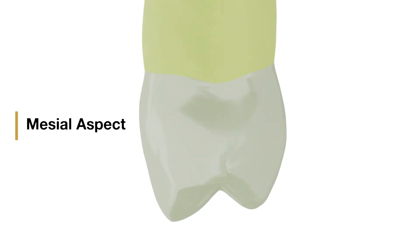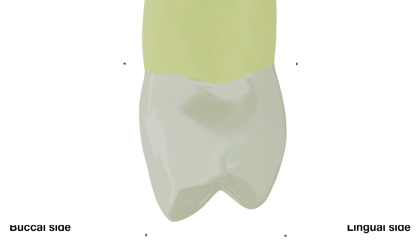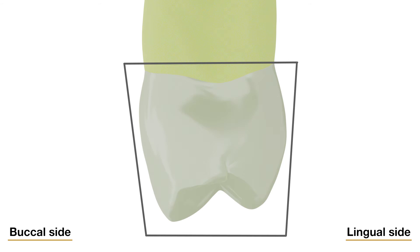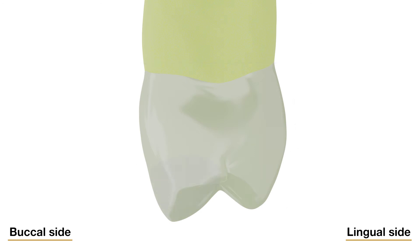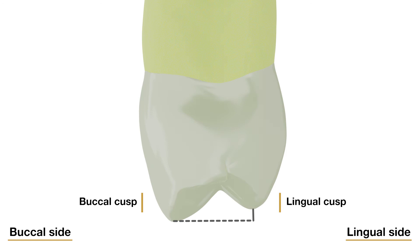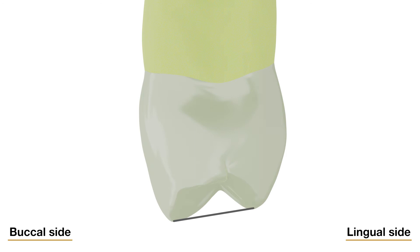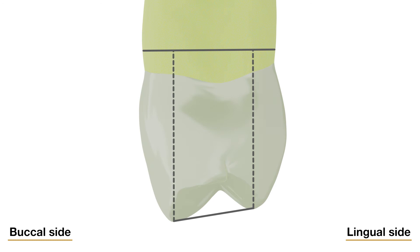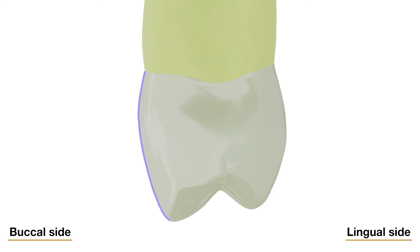Moving on to the mesial aspect. The mesial aspect of the crown of the maxillary first premolar is also roughly trapezoidal, with the longest of the uneven sides towards the cervical portion and the shortest towards the occlusal portion. The maxillary first premolar has two cusps, a buccal and a lingual, each being sharply defined. The buccal cusp is usually about one millimeter longer than the lingual cusp. The buccal cusp of the maxillary first premolar assists the canine as a tearing tooth. The measurement from the tip of the buccal cusp to the tip of the lingual cusp is less than the buccolingual measurement of the root at its cervical portion, so the tips of the cusps are well within the confines of the root trunk. From the mesial aspect, the buccal outline of the crown curves outward below the cervical line to the crest of curvature, which is often located approximately at the junction of the cervical and middle thirds.